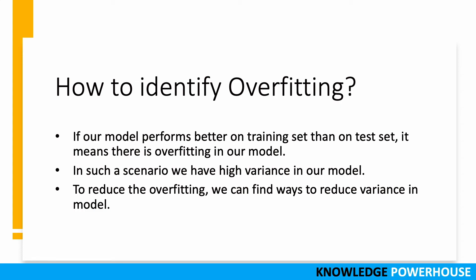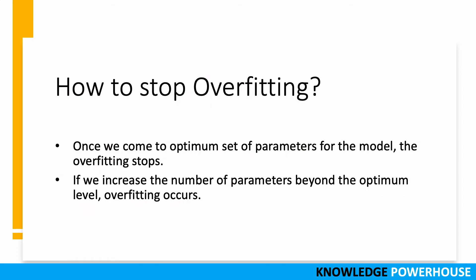There are different ways to reduce overfitting — we have a further video on that, so do watch it. One generic way to stop overfitting is to find an optimum set of parameters for the model. We don't want all features or overly complicated parameters — just an optimum set. If we increase the number of parameters beyond the optimum level, making the model more complicated, overfitting will occur. There are various techniques like regularization and other mechanisms by which we can prevent overfitting, and we'll cover those in the next session.